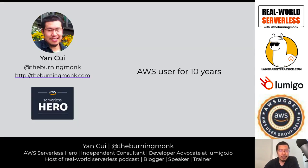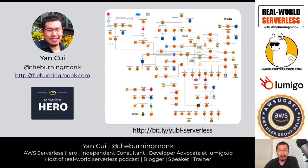A quick introduction about myself: my name is Yan Cui, I'm an AWS Serverless Hero. I've been building systems on AWS for over 10 years across different industries — e-commerce, social networks, gaming, and so on. One of the things I've done is move a social network to run pretty much entirely on serverless around 2016. In the last couple of years, I've primarily focused on serverless technologies within AWS.